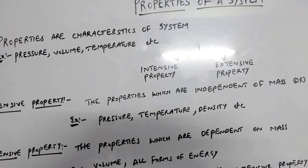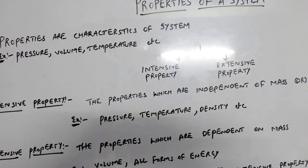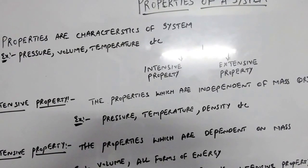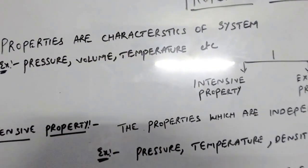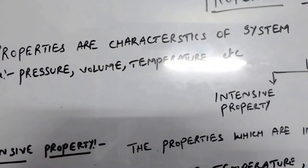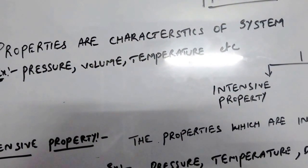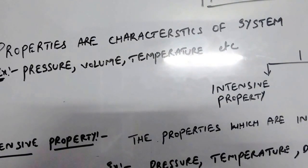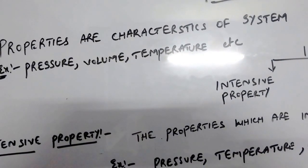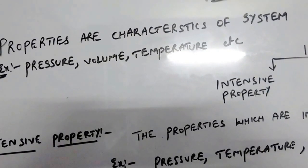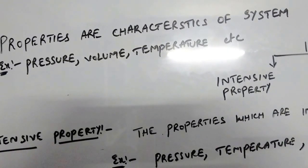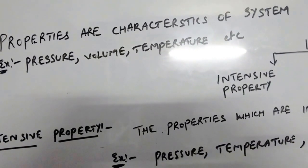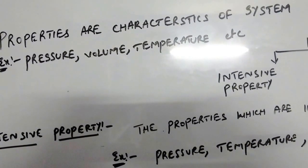Properties of a system are nothing but the characteristics of a system. Examples of properties are pressure, volume, temperature, etc. To understand this, consider a small example: if we want to define any human being in a physical sense, we define them by height, color, and weight. Likewise, if we want to define any thermodynamic system, we need some characteristics — those are nothing but properties. For example, consider a hydrogen gas.